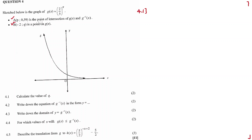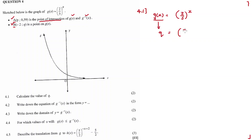Point A happens to be the point of intersection between G and its inverse — very important information. So for this one, we have G of X which is (2/5) raised to exponent X. The Y coordinate of point B is Q.